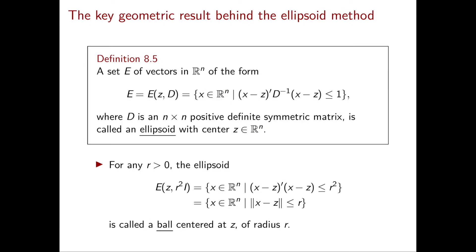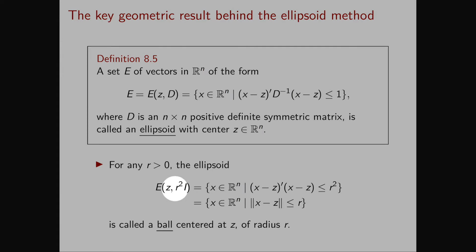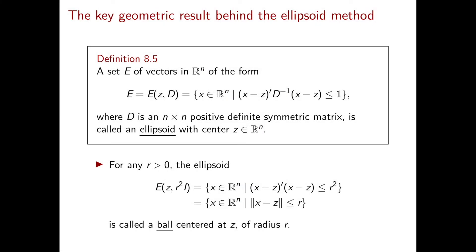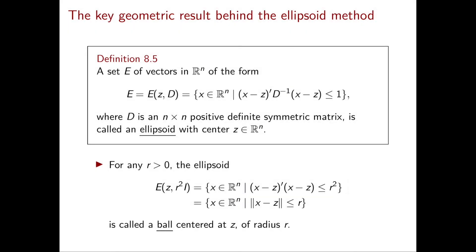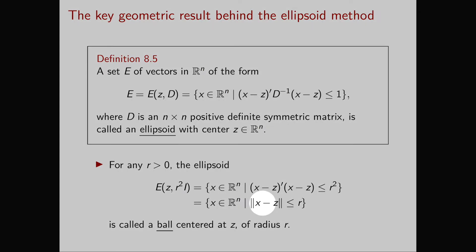A very special type of ellipsoid is the ball. A ball centered at z and of radius r is defined as the ellipsoid E(z, r^2 I), where I is the identity matrix. If we use the definition of ellipsoid, we obtain that this is the set of points in R^n that satisfy (x minus z) transpose times (x minus z) less than or equal to r^2. Therefore the set of vectors x in R^n that satisfy the 2-norm of x minus z less than or equal to r.